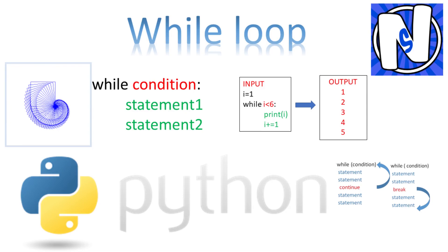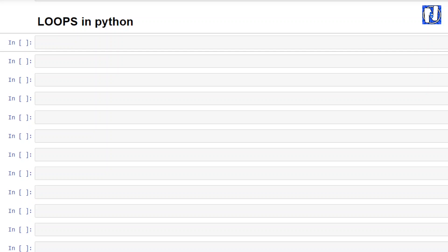Hello friends, today we will discuss about while loops in Python. Python has two primitive loops: a while loop and a for loop. In while loops we will go through a while statement, break statement, continue statement, and else statement.